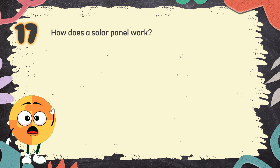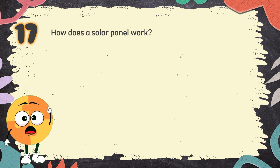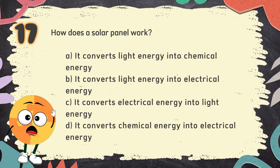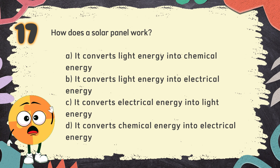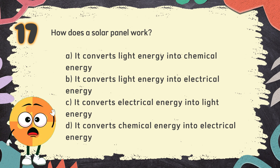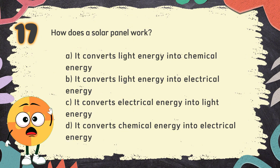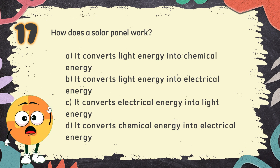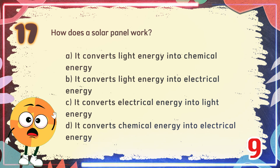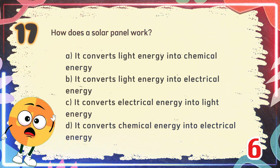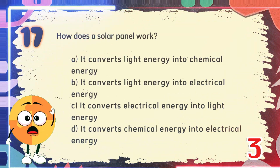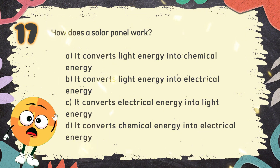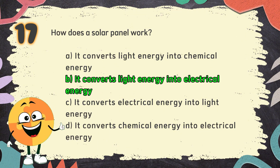Number 17. How does a solar panel work? The choices are: A. It converts light energy into chemical energy, B. It converts light energy into electrical energy, C. It converts electrical energy into light energy, D. It converts chemical energy into electrical energy. The correct answer is B. It converts light energy into electrical energy.